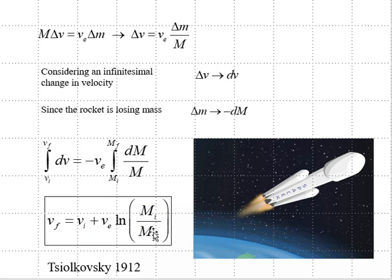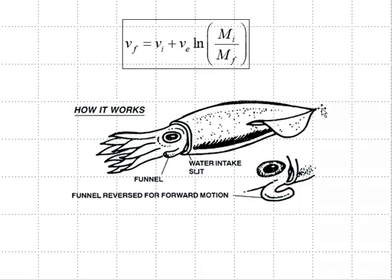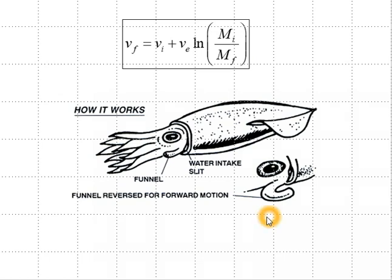Since M initial will be greater than M final, the logarithm is positive and we get an increase in rocket speed. One of your WebAssign problems is to calculate the increased speed of a squid after it ejects its propellant mass, thereby reducing its mass — M initial greater than M final. This analysis neglects the resistive drag of the external medium. The squid can also adjust its rocket nozzle for forward propulsion.